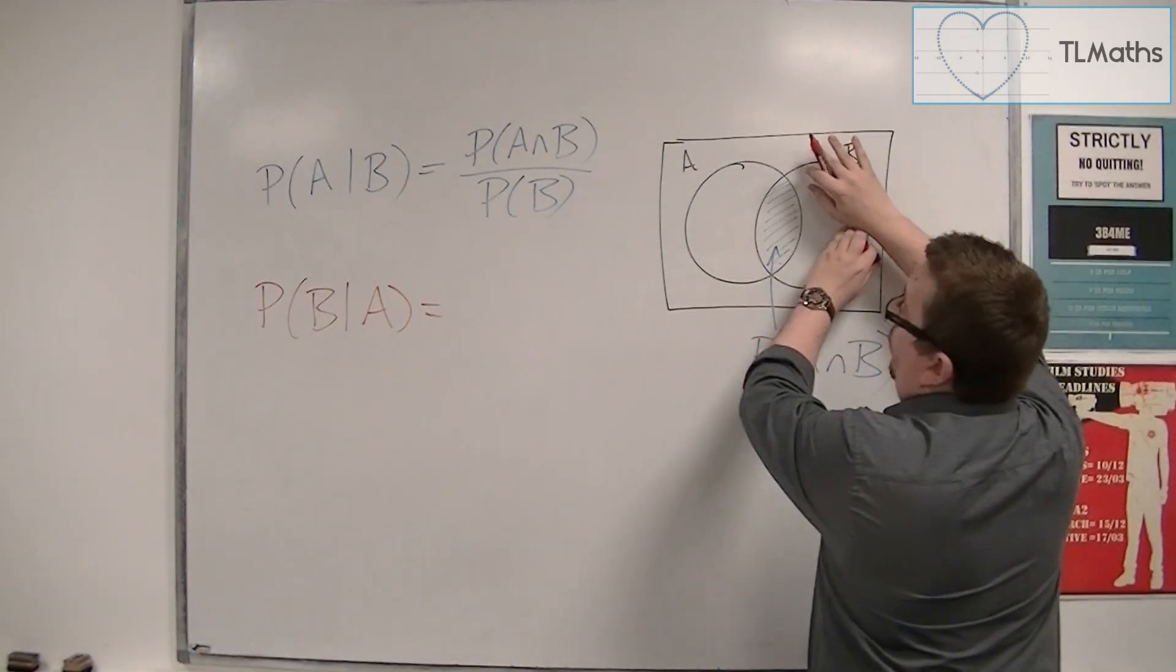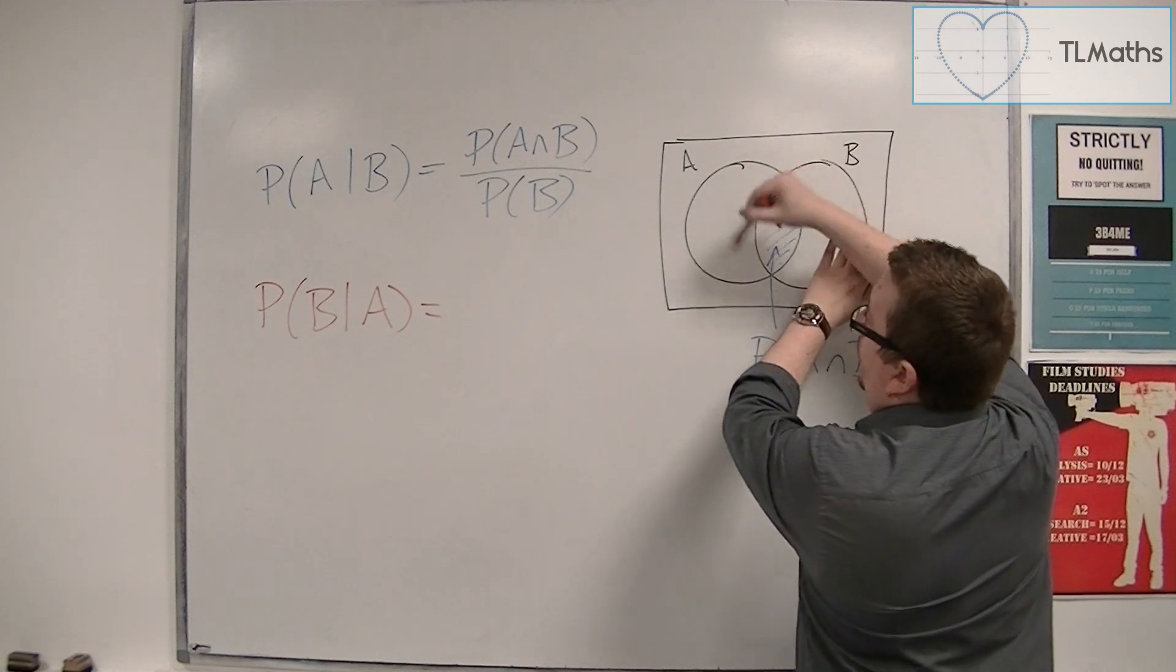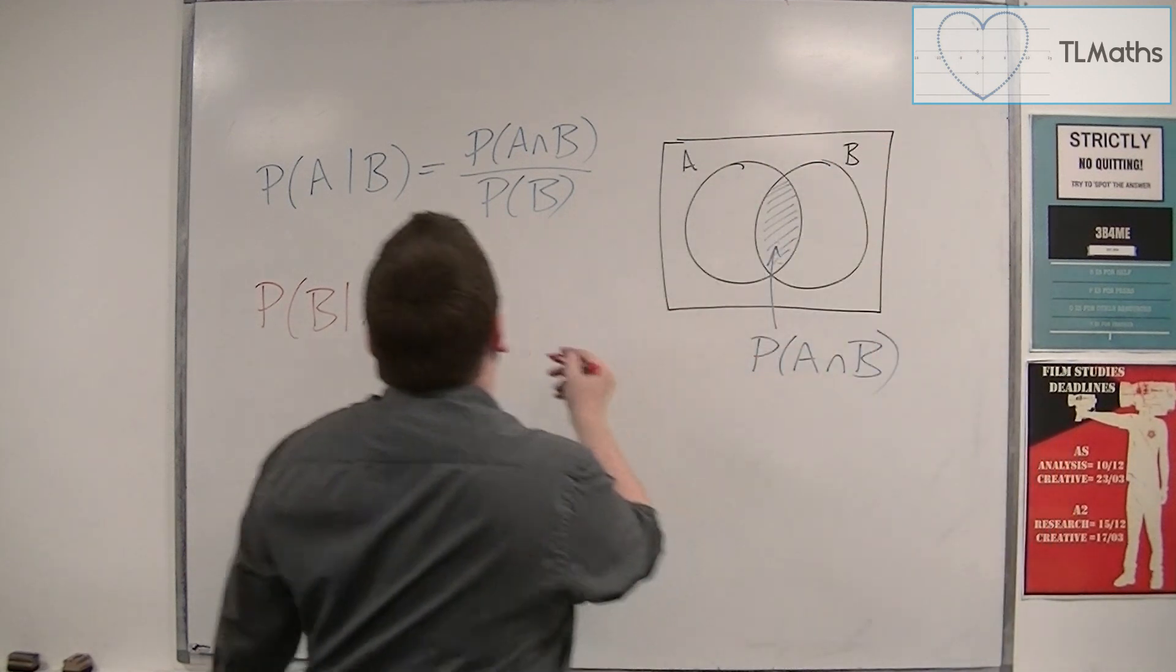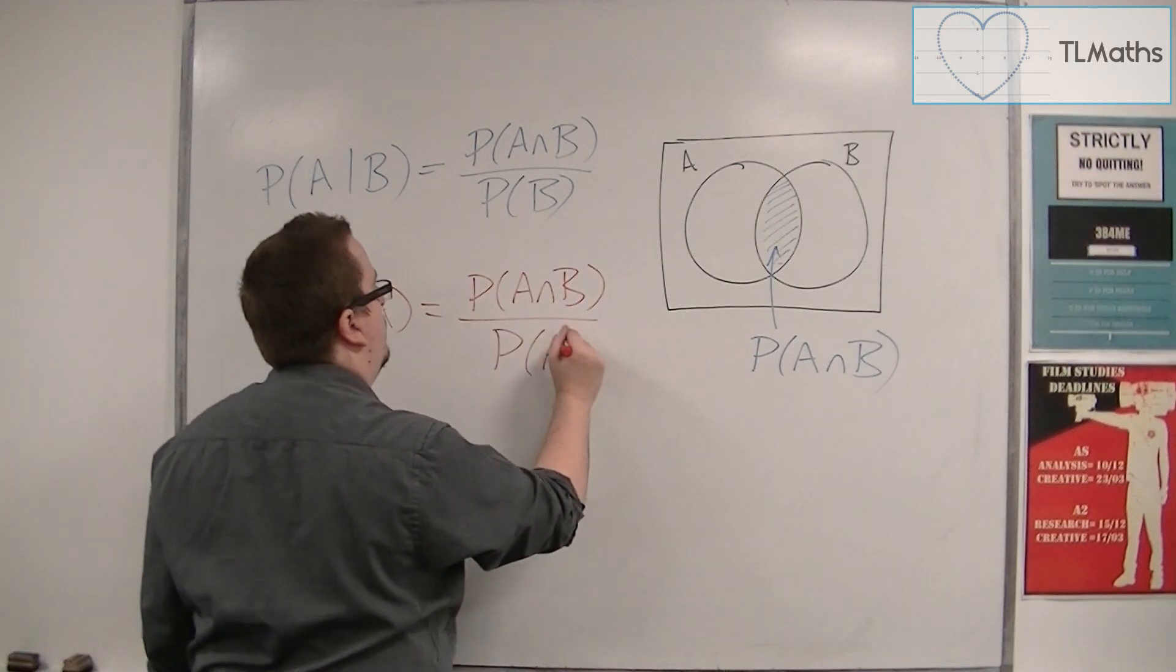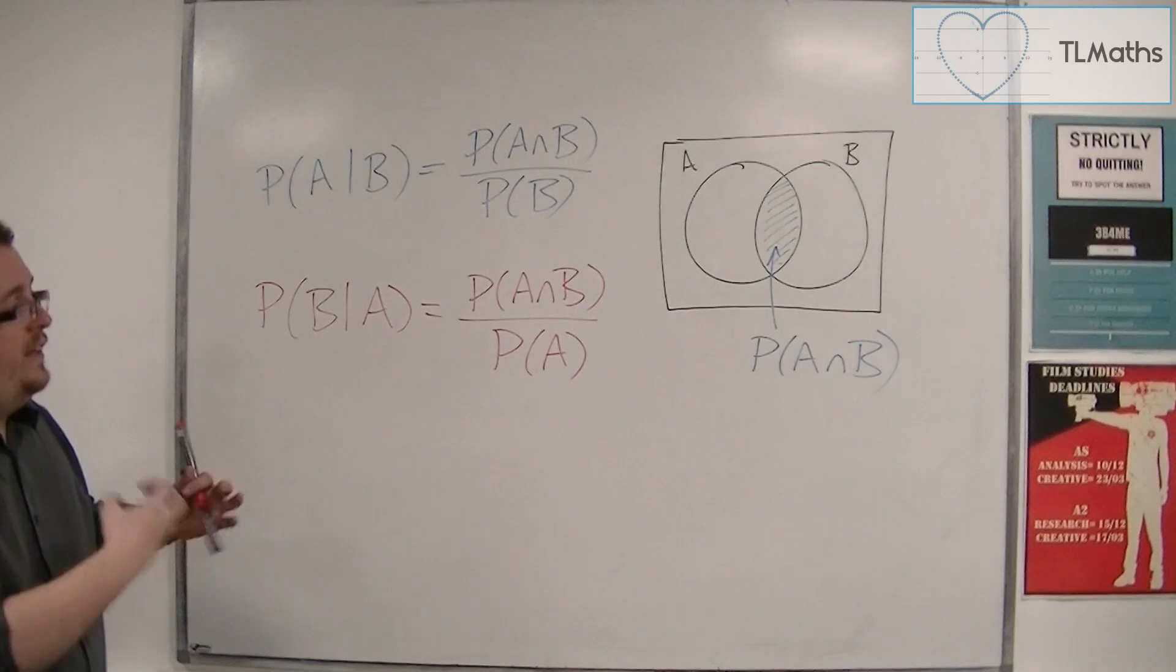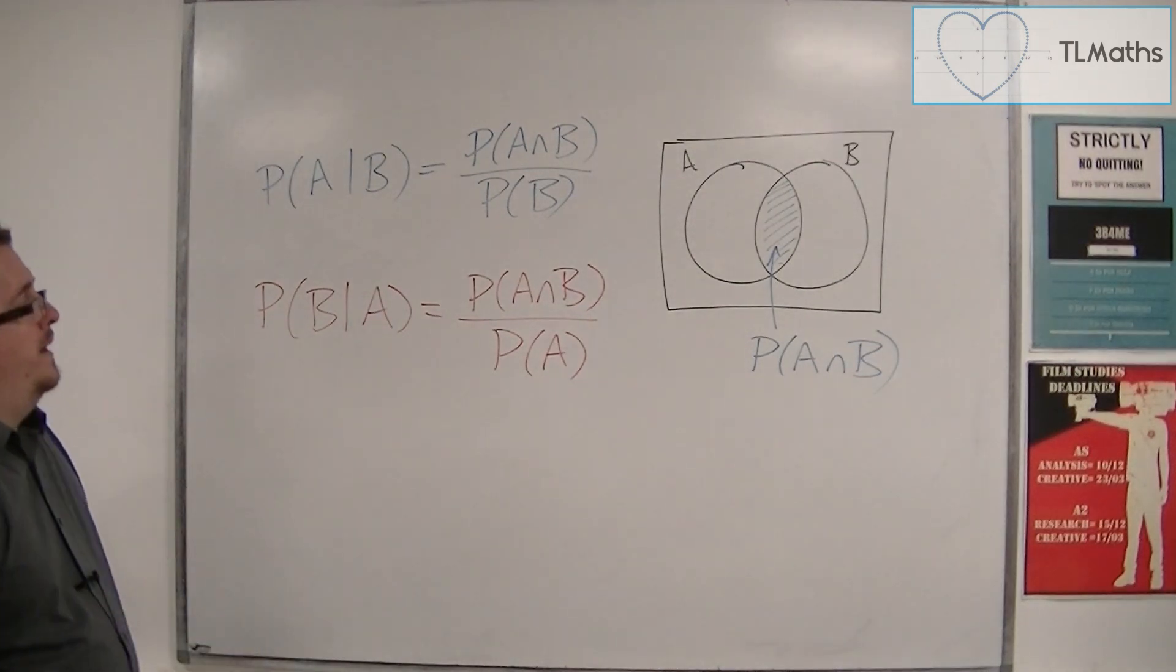we could also write it as the probability of B given A and work it around the other way instead. So, given A, what's the probability of B? Well, it's this bit out of the whole probability of A. So, make sure you know that you can reverse things around and reorder the letters and find other probabilities that way.